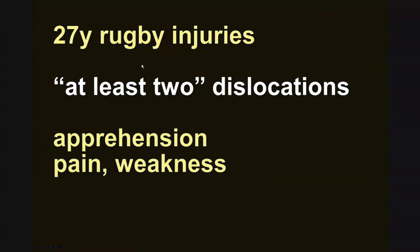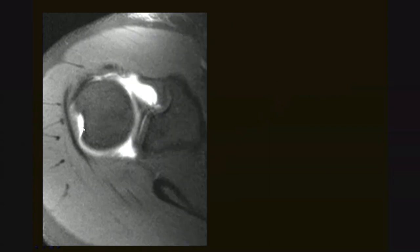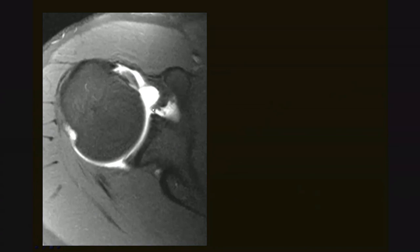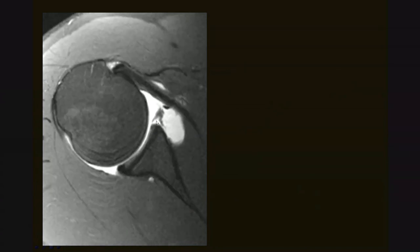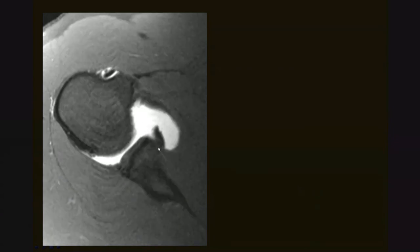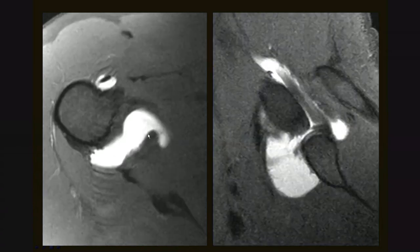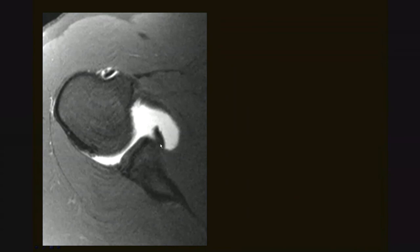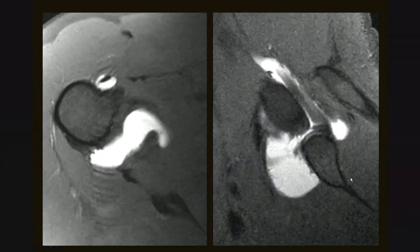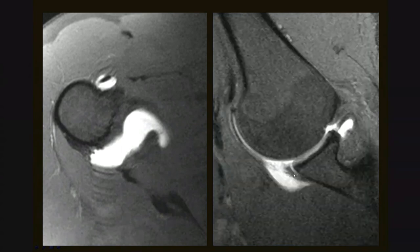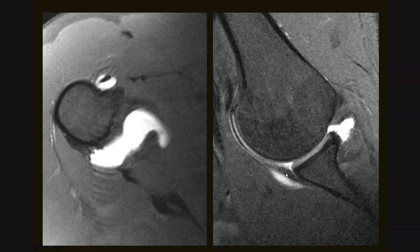Nearing the end — this is an individual who's had some rugby injuries and thinks he's had at least two dislocations. Based on physical exam he clearly has an unstable shoulder. Right away we see an impacted Hill-Sachs fracture. Here is the anterior labrum and the MGL. Following the labrum distally down to the glenoid, it is medialized — the IGL comes up and is attached to a labrum that's scarred down and displaced from its expected location. This is the so-called ALPSA lesion. On the ABER images, here is the labral tear, the IGL followed down to the labral attachment site where the labrum should be but is displaced medially — this is capsular and periosteal stripping. A medialized labral ligamentous complex: classic ALPSA lesion.